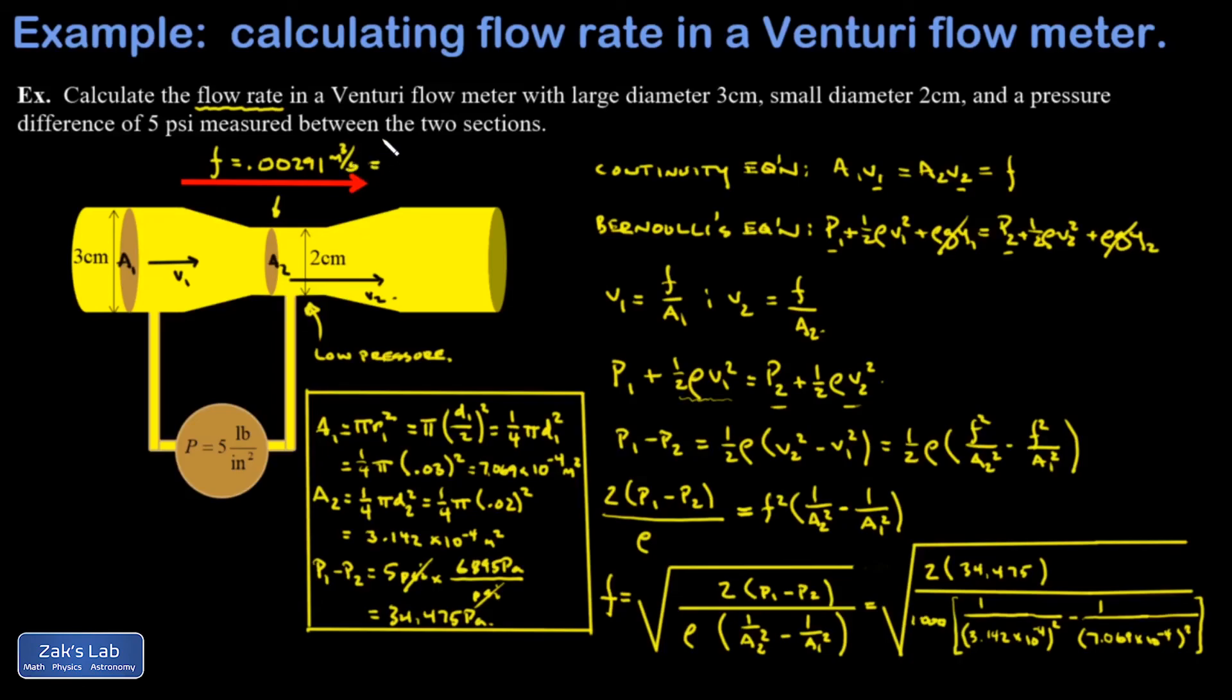For a water pipe, a cubic meter per second is a huge volume, so I'm going to switch to liters per second. That's a factor of a thousand, so this gives me 2.91 liters per second moving through the pipe.